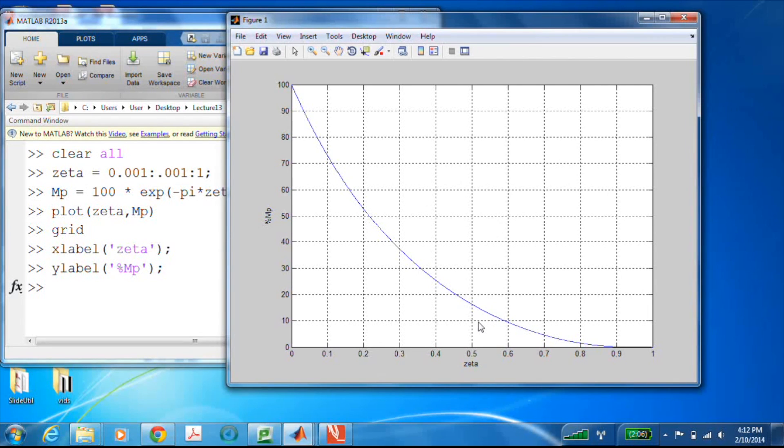So just to recap, if you're so lucky that you have a second-order system with no zeros, then you can take the step response performance specifications of rise time and settling time, percent overshoot, the time of the peak overshoot, and relate them to zeta and omega n. That's a wonderful thing.